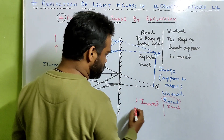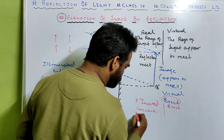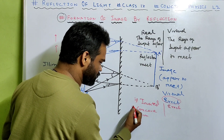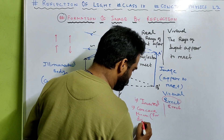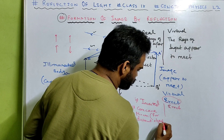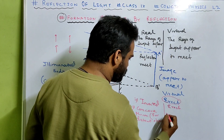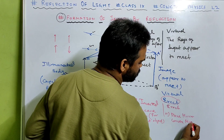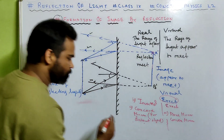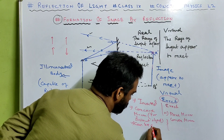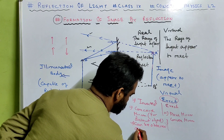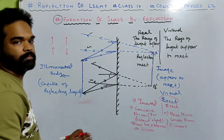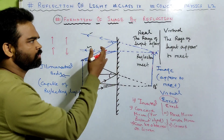Real image is formed by a concave mirror — for a distant object. Virtual image is formed by a plane mirror and by a convex mirror. We will study about convex and concave mirror, so don't worry. Number four: real image can be obtained on a screen, and virtual image cannot be obtained on the screen. These are the four differences between real image and virtual image.